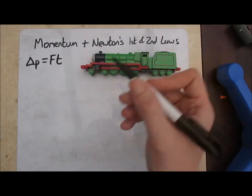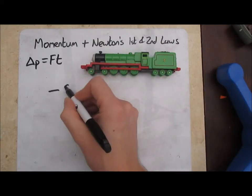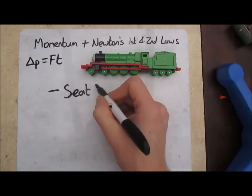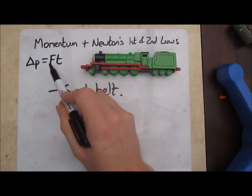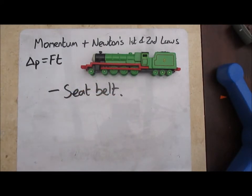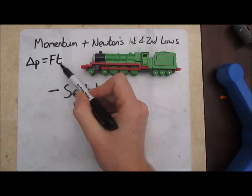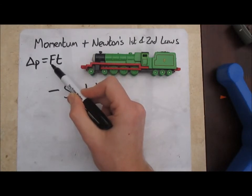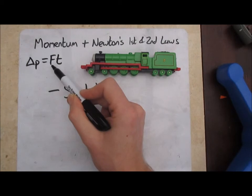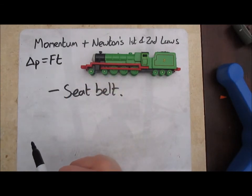The obvious one for the driver that we can start with is a seat belt. So the seat belt, what it does is it doesn't lock immediately on impact because that would again be a very short amount of time, it would actually do a lot of damage to the driver. What it does is it gives a little bit first, that means that it will increase the time the driver slows down for, reduce the force on the driver, and massively therefore reduce any injuries that take place.